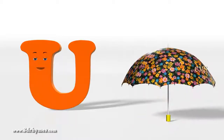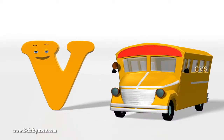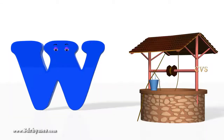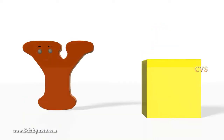U is for ombrella, W is for one, W is for will, X is for frog, Y is for yellow.